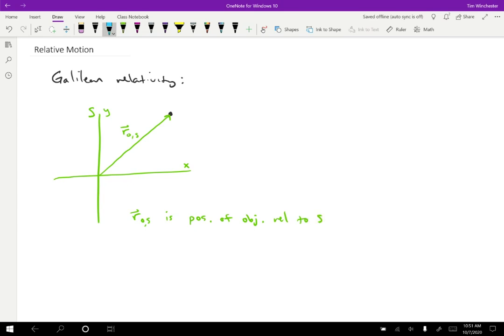Then I want to draw a second coordinate system over here, and I'll call this one S prime. The coordinates here will be X prime and Y prime. We'll be able to tell which coordinate system we're using based on whether it has primes or not. If I want to show the position of that same object in frame S prime, well, I'm measuring from a different spot. So now the position vector is R_0,S prime.